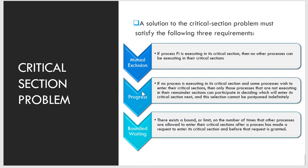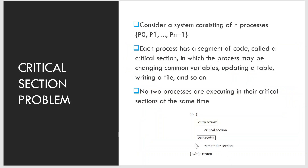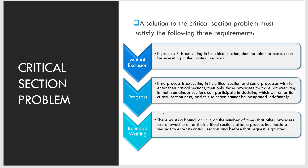The second requirement is progress. If no process is executing in its critical section and some processes wish to enter, then only those processes not executing in their remainder sections can participate in deciding which will enter next, and this selection cannot be postponed indefinitely. For example, with processes P1, P2, and P3 — if P2 wants to enter its critical section, only processes not in their remainder section will together decide who accesses the critical section next, without indefinite postponement.